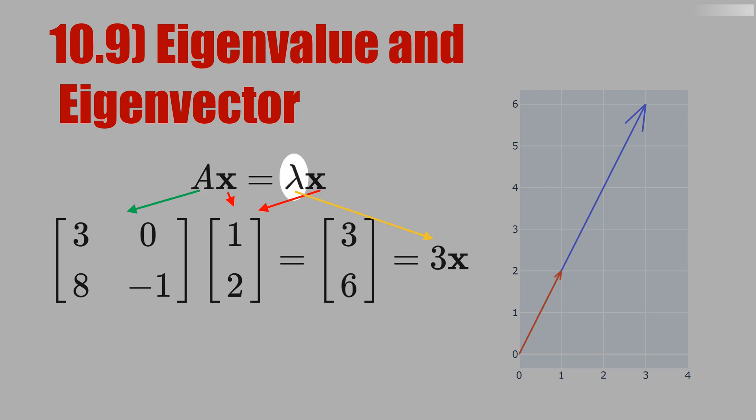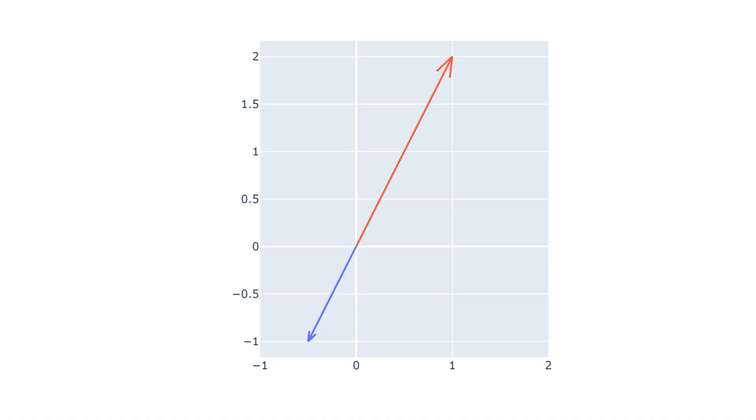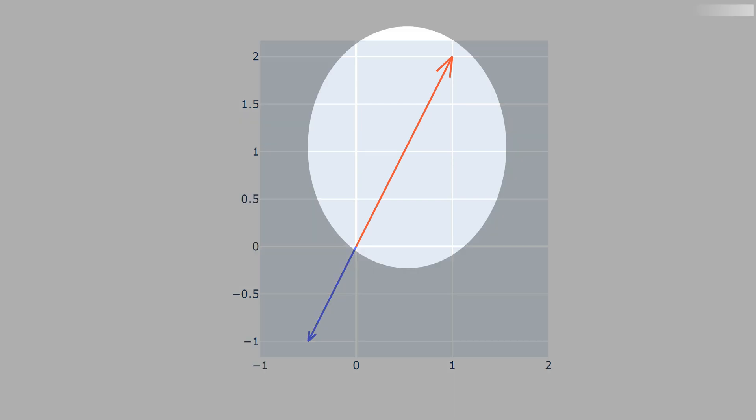Suppose we have eigenvalue minus half. What would be the graphic? This would be the chart of eigenvalue minus half. See that the original vector is this red arrow. If you multiply the original vector by minus half, you change the direction by 180 degrees and you decrease the magnitude by half. That's why the blue arrow is half of the red arrow.